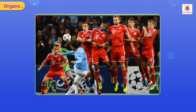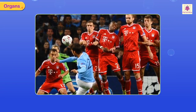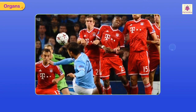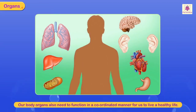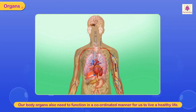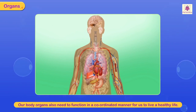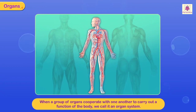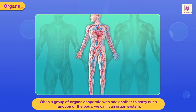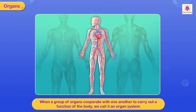A football game can only be won if all the players play in a coordinated manner. Similarly, our body organs also need to function in a coordinated manner for us to live a healthy life. When a group of organs cooperate with one another to carry out a function of the body, we call it an organ system.